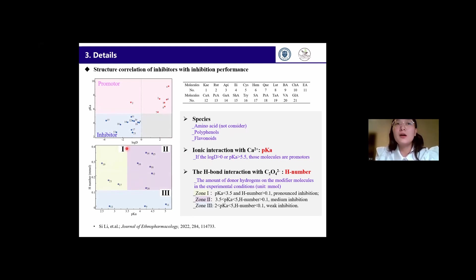For example, if the modifier's pKa is less than 3.5 and its H-number is greater than 0.1 M-molar, it will be located in Zone 1. It shows this modifier displays pronounced inhibition effects. While if a modifier locates in Zone 3, it shows it may have weak inhibition performance.